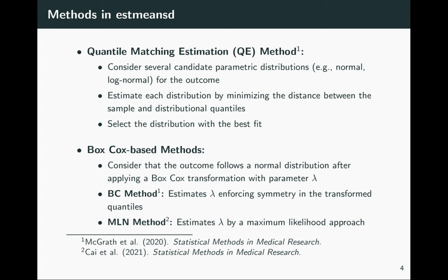The QE approach works as follows: we fit several different candidate parametric distributions for the outcome — for instance, the normal distribution, the log-normal distribution, or other skew distributions, since skew distributions may be reasonable when studies report the median. For each of these distributions, we estimate the parameters by minimizing the distance between the sample quantiles and the quantiles of the distribution. We then select the distribution with the best fit, and use its mean and standard deviation as our estimates.